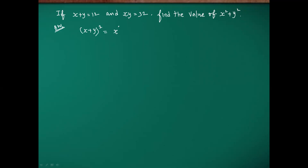We know that x plus y whole square is equal to x square plus y square plus 2xy. We can substitute the values. x plus y is 12, so we write 12 square on the left side.